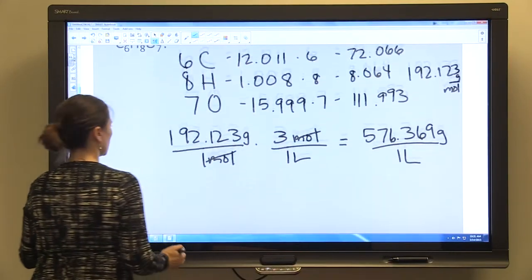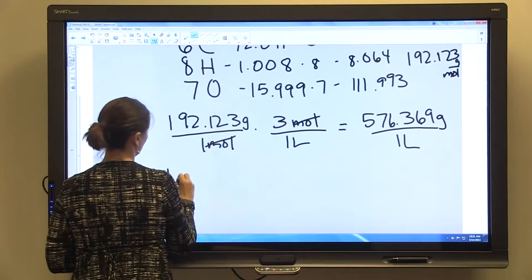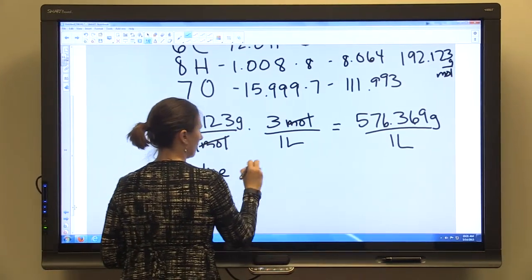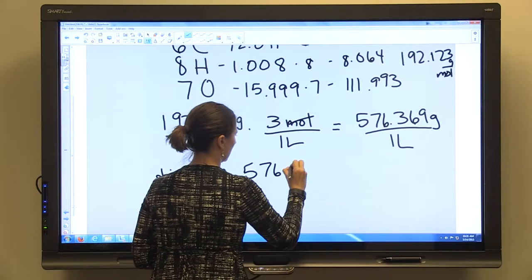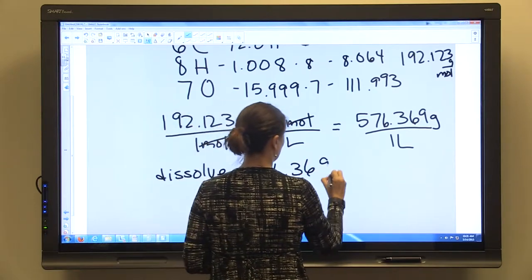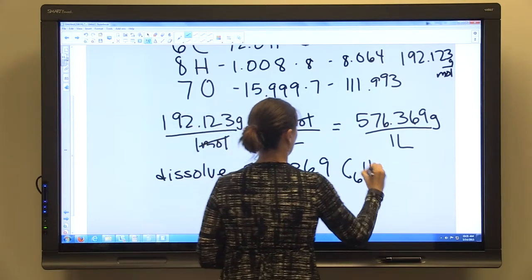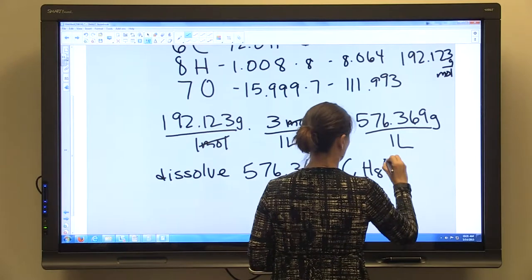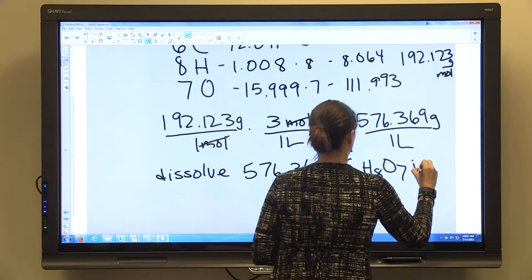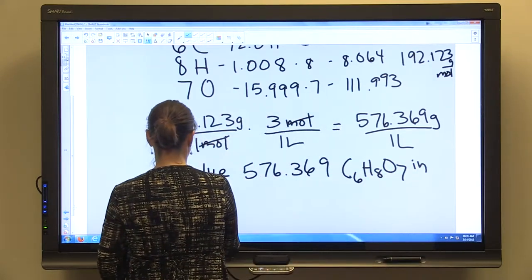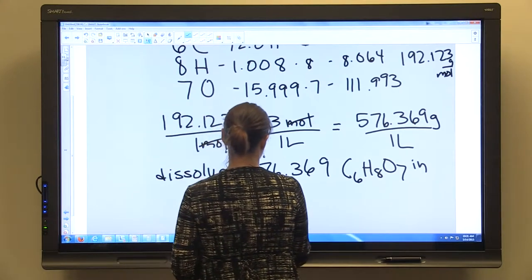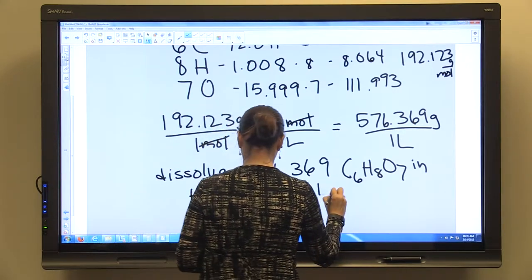And so again, we're going to dissolve 576.369 grams of C6H8O7 in water and bring to the volume of one liter.